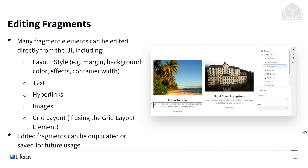One of the great strengths of fragments is their easy editing capabilities. Right after dragging them, without jumping into the code, we can edit a few different things: layout style — like margin, background color, effects, and container width — as well as text, hyperlinks, images, and the grid layout if you're using the grid layout element. Edited fragments can be duplicated or saved for future use. Maybe I want to include some sample text or apply some formatting and reuse it on other pages — I have that option.